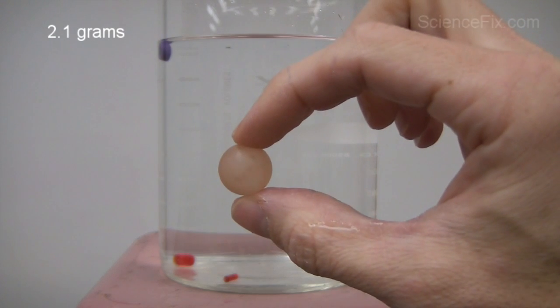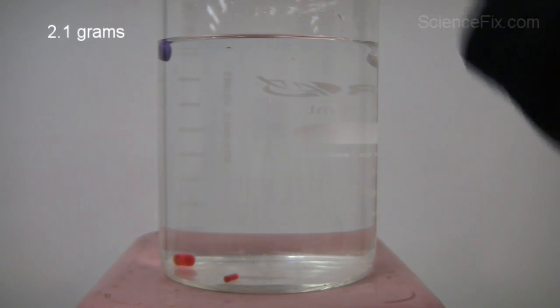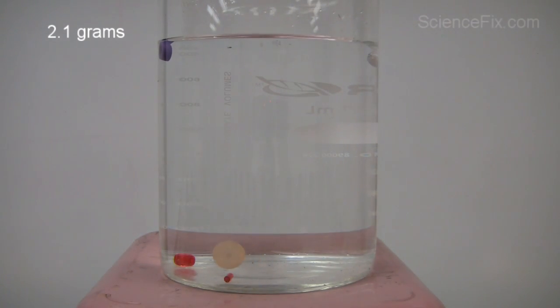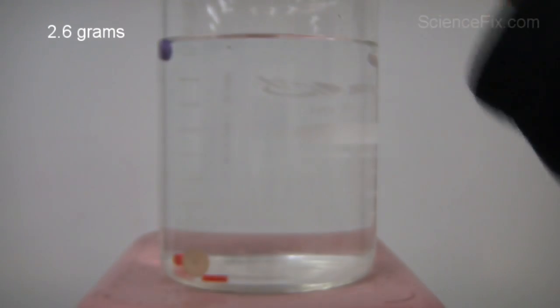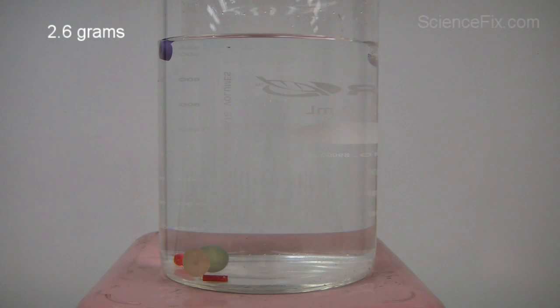Next up is the peach marble with a mass of 2.1 grams, and it sinks. Here we have the green marble with a mass of 2.6 grams, and the green marble sinks.